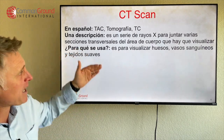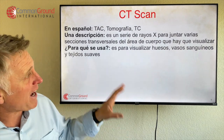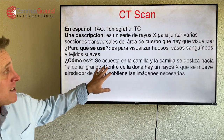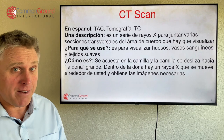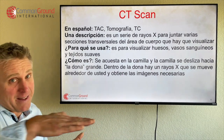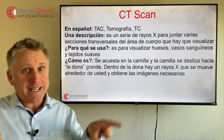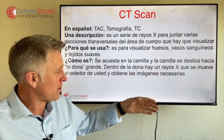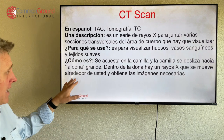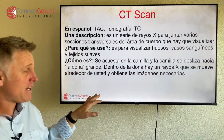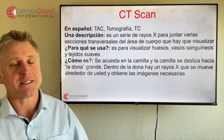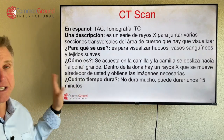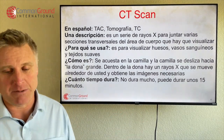¿Para qué se usa? Es para visualizar huesos — it's to see bones — vasos sanguíneos, blood vessels, y tejidos suaves, and soft tissues. Se acuesta en la camilla, so you lie down on that bed, y la camilla se desliza toward that big donut — the circle. Dentro de la dona hay un rayos X, so inside that donut there's an x-ray que se mueve alrededor de usted, y obtiene las imágenes necesarias, and gets the necessary images. ¿Cuánto tiempo dura? No dura mucho — puede durar unos 15 minutos, it doesn't last long, might last 15 minutes or so.